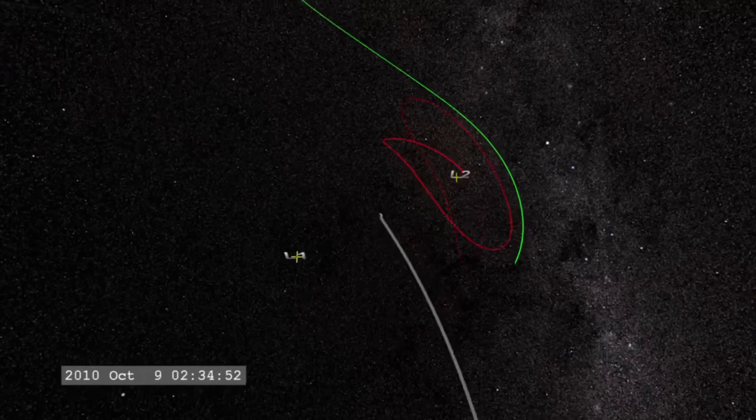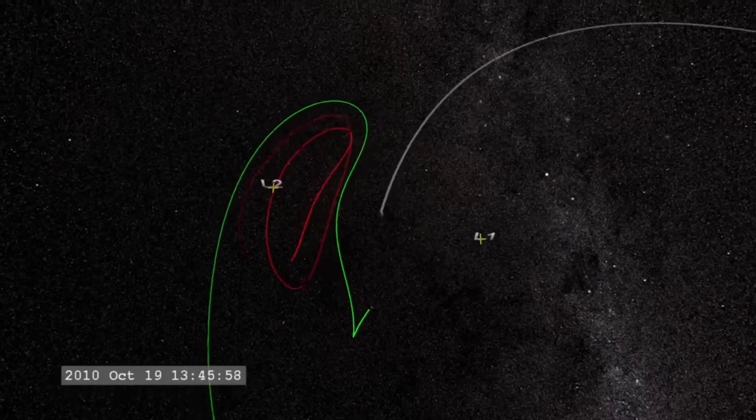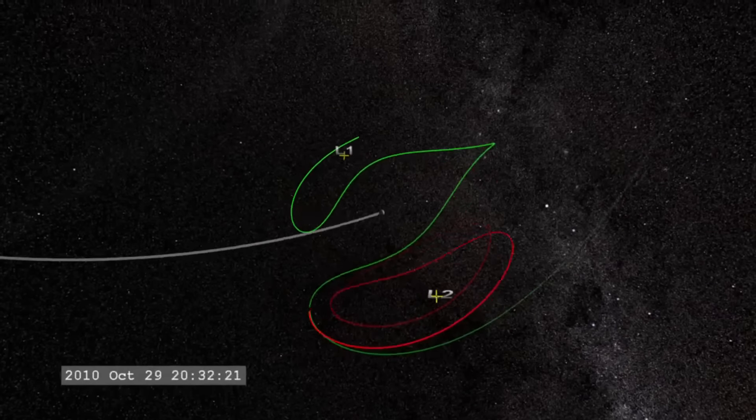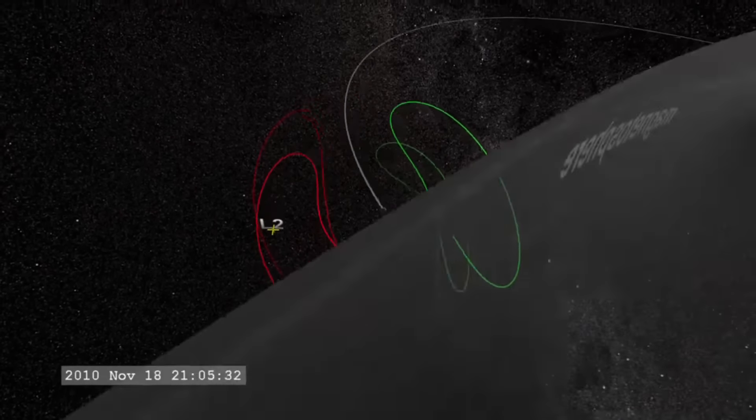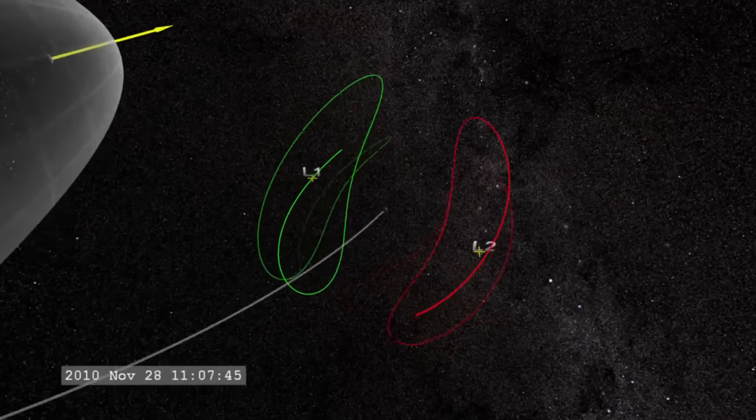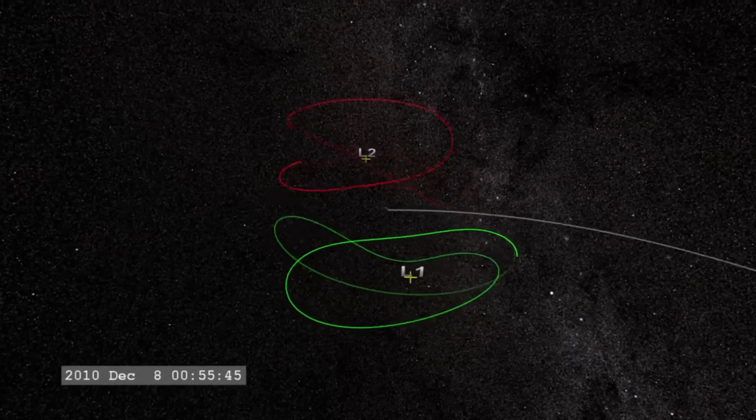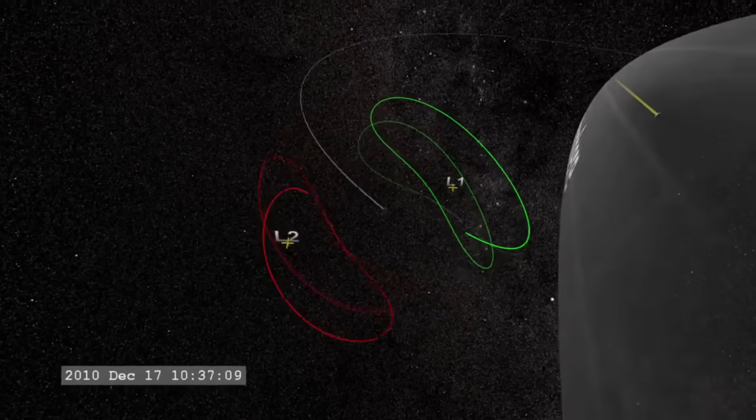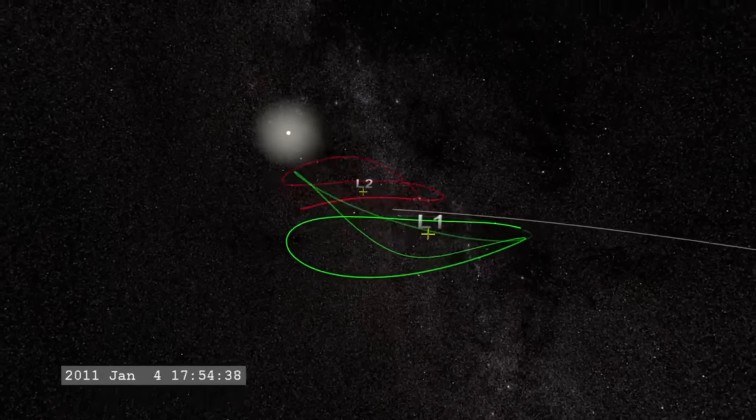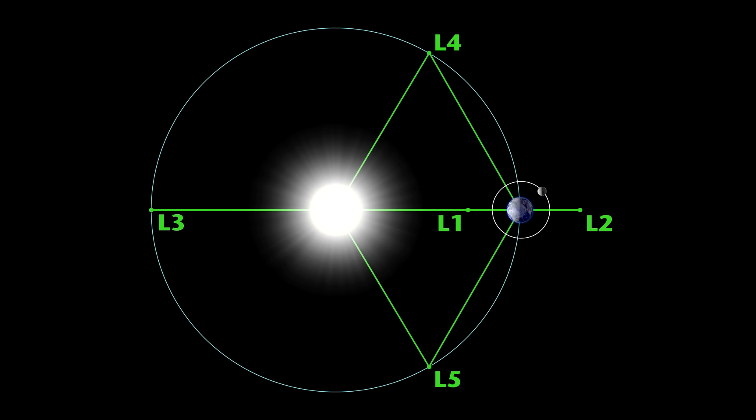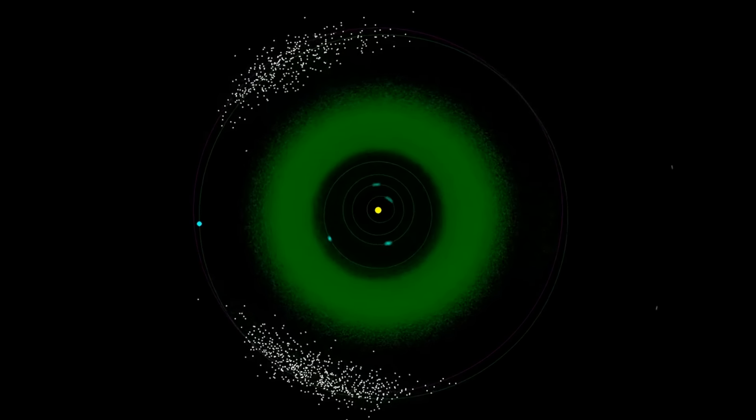Lagrange points often come up in orbital mechanics. They're places in deep space where you can put a spacecraft and it can kind of chill out there and roughly remain where it is without expending too much propellant to stay there. They're points in space that are relative to a central body and another object orbiting it. So there are Lagrange points that are around the Sun and Earth system, the Sun-Jupiter system, or even the Earth and Moon system.